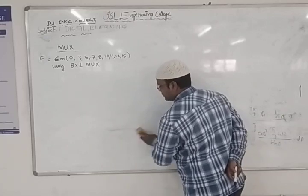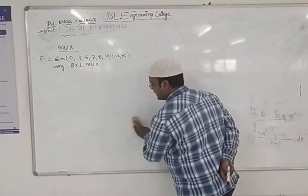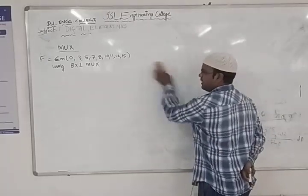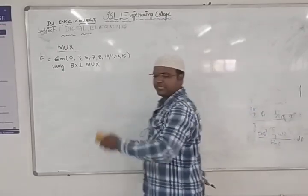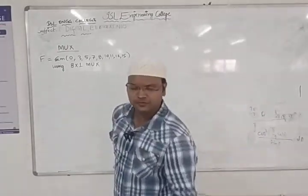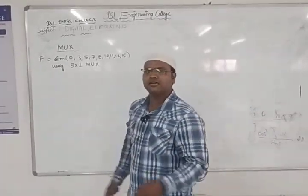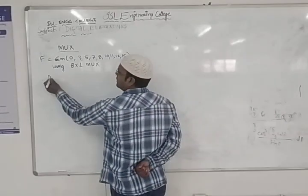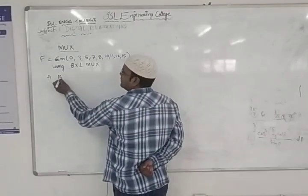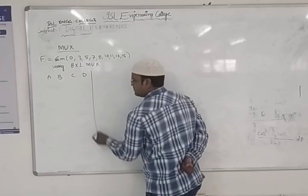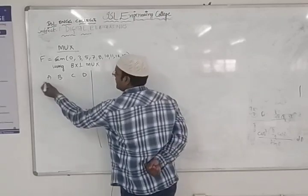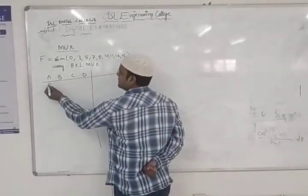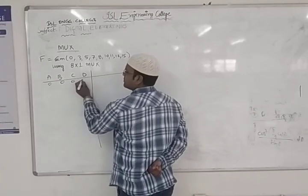The 8-to-1 multiplexer consists of eight inputs. We design it as per that. The four variable inputs are A, B, C, D and I write down the output respective values for each combination, starting with 0000, 0001, 0010, 0011 and so on.